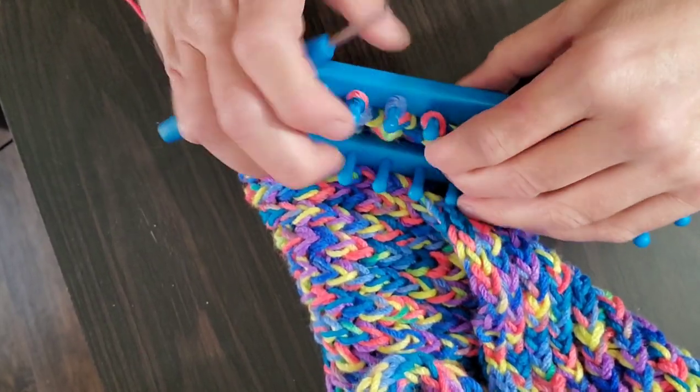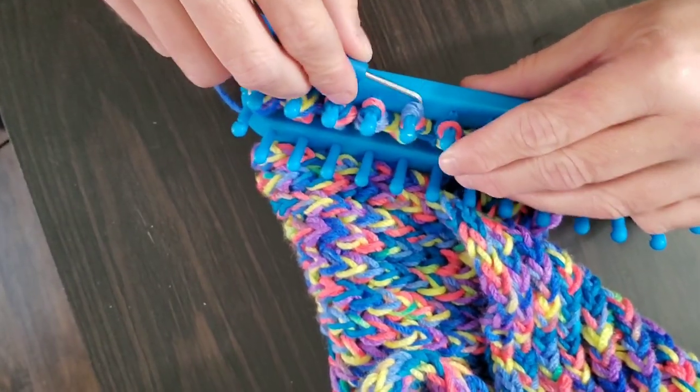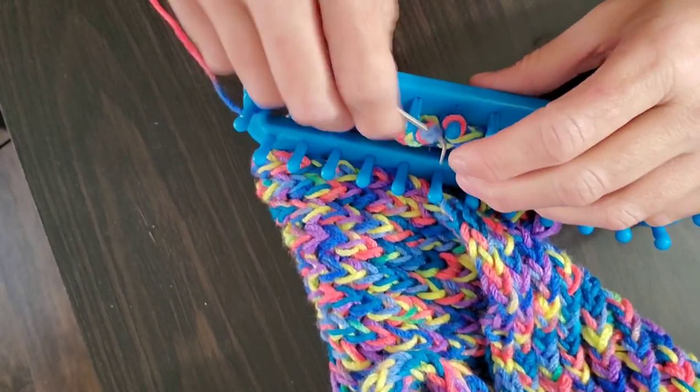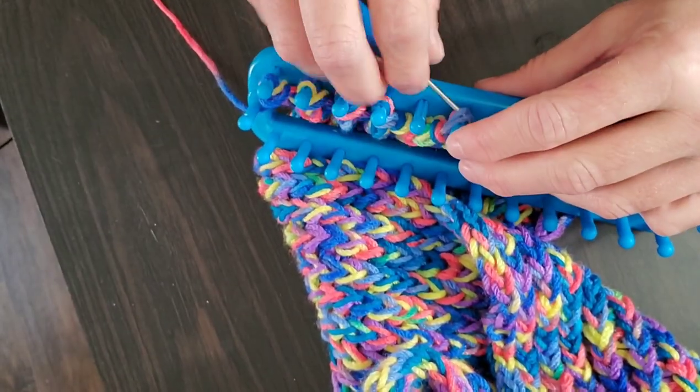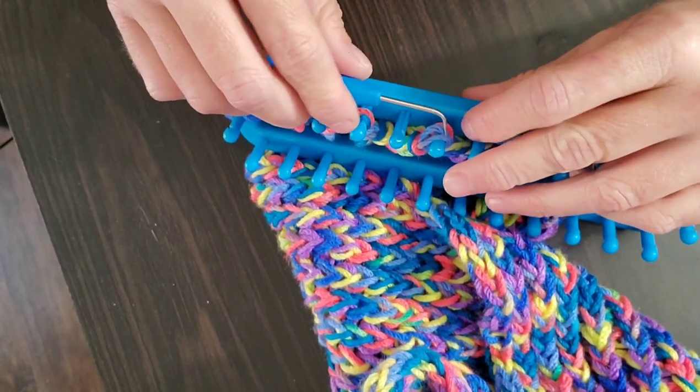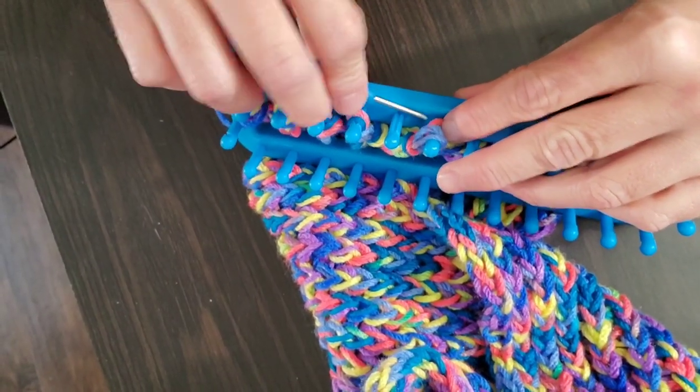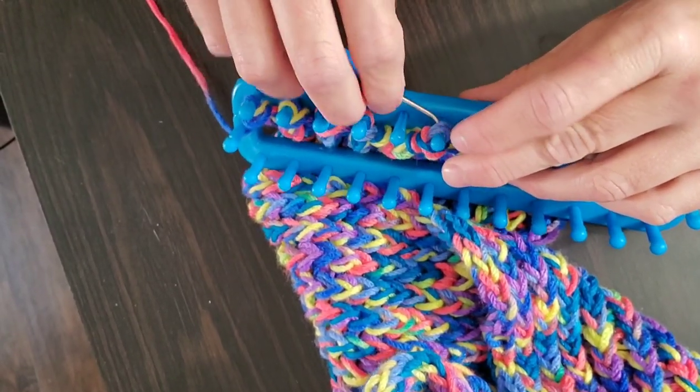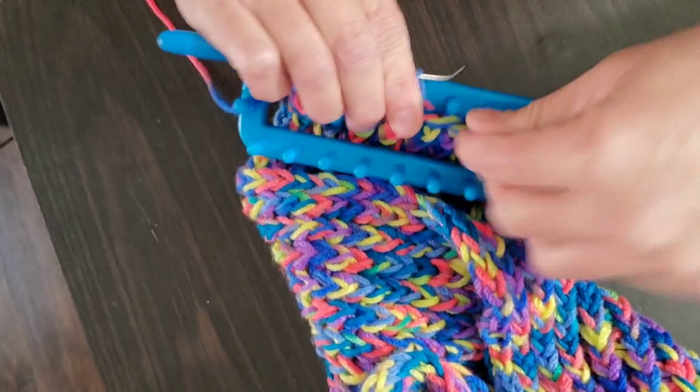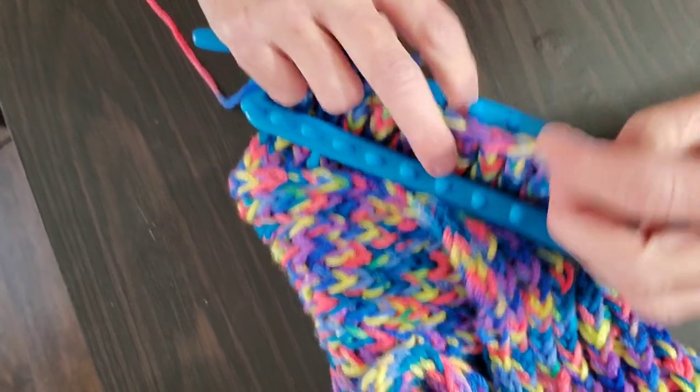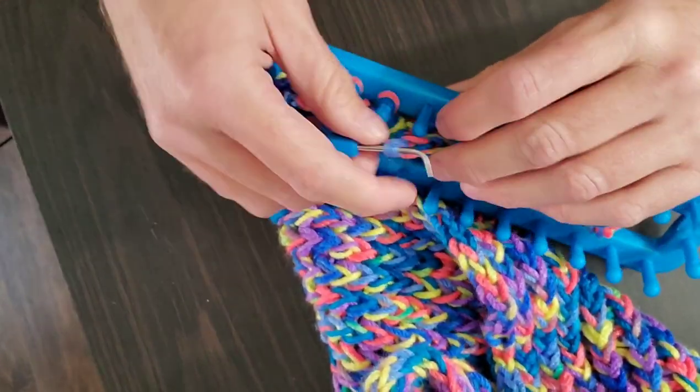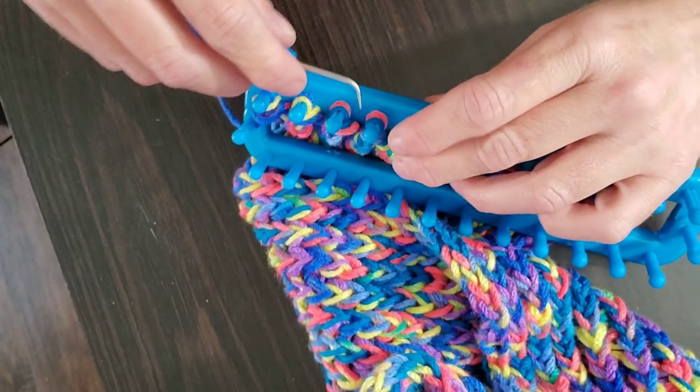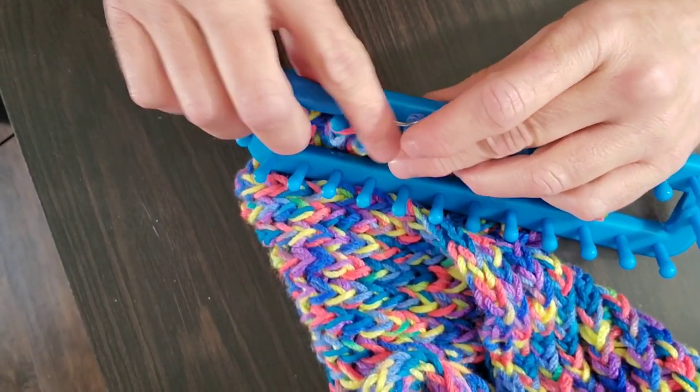And there are different bind off techniques and this is the average one, basic one I use when I am making a scarf. Now say if I were making like a head warmer or a headband, something where I wanted it to have a stretchy, this is not going to have some stretch, but not a lot. But there are different bind off techniques that you can use that will give it more stretch.